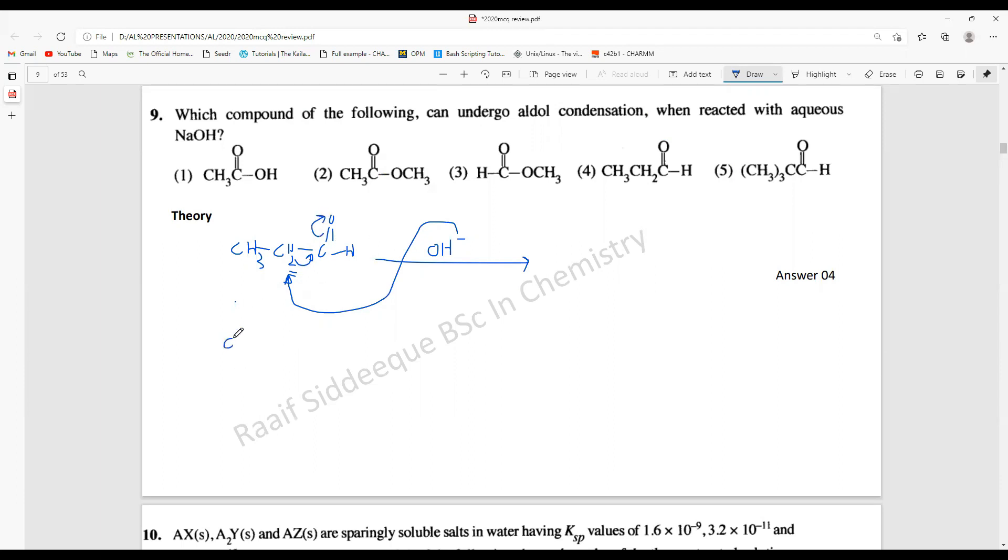Basically what happens is CH3 and there will be only one hydrogen now because one hydrogen is taken by this OH minus to form water molecule. Here there will be a double bond like this and this will be OH minus, and this is our initial nucleophile.